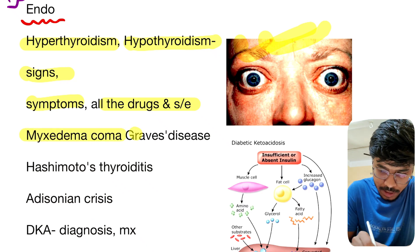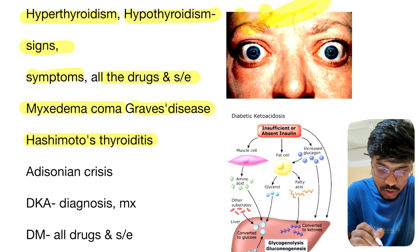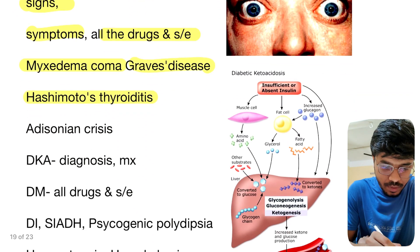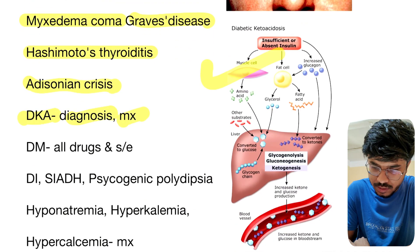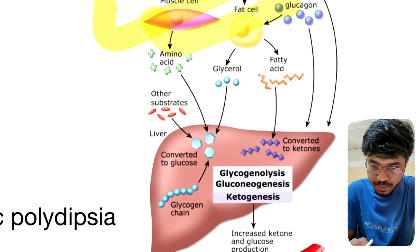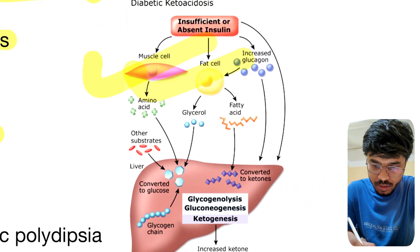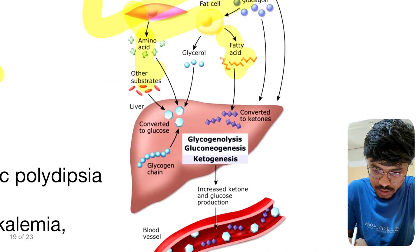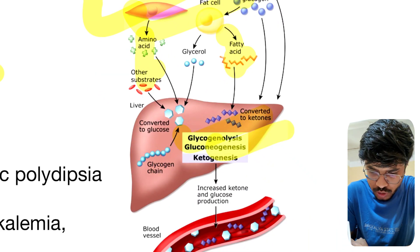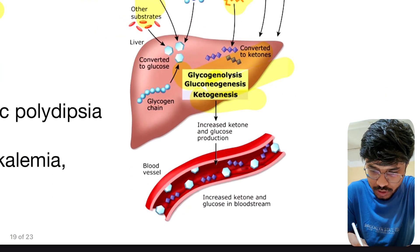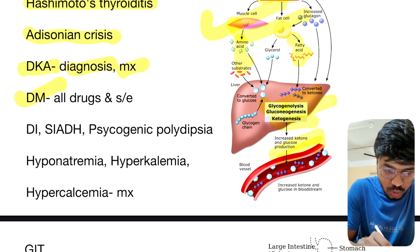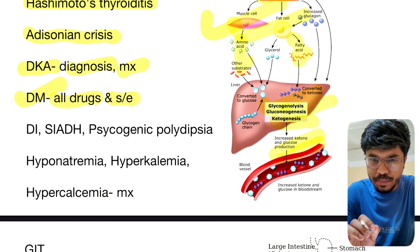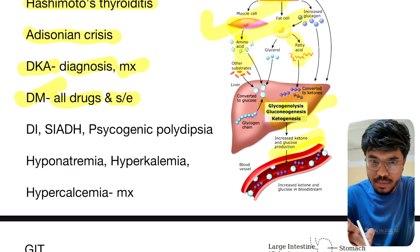Myxedema coma, Graves disease, Hashimoto's thyroiditis — again important topics. Addisonian crisis: diagnosis and management. This is the pathophysiology of DKA — absence of insulin leads to amino acid release, fatty acid release, glycogenolysis, gluconeogenesis, and ketogenesis, resulting in increased production of ketones.